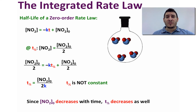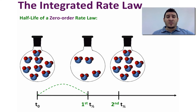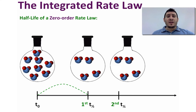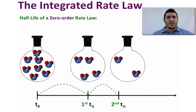For example, if you have eight particles at time t₀, at the first half-life you consume four particles, leaving four. For the second half-life you consume half of four, which is two particles. Comparing the first half-life to the second, you can see that the first half-life is longer than the second — the half-life is decreasing with time.